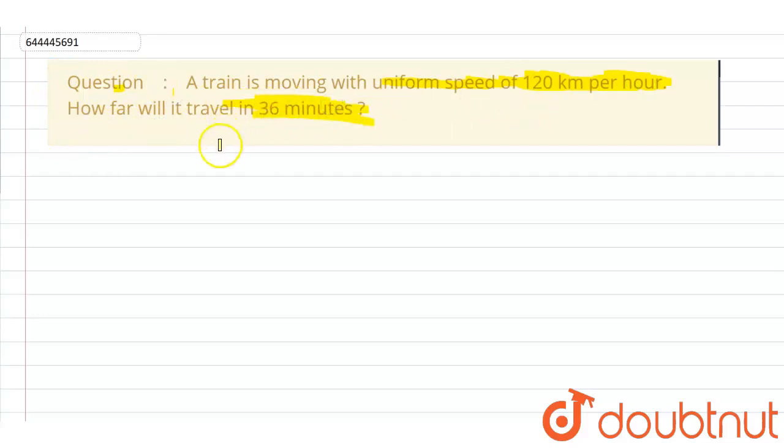We have speed and time, and we have to find out the distance. The time is in minutes, so we have speed equals to 120 kilometers per hour.